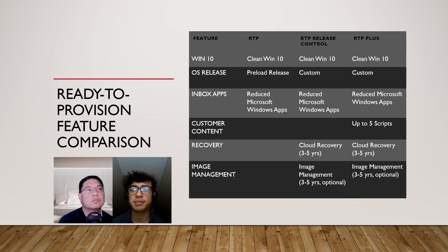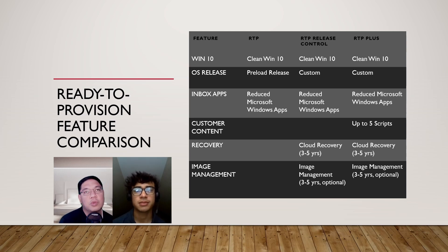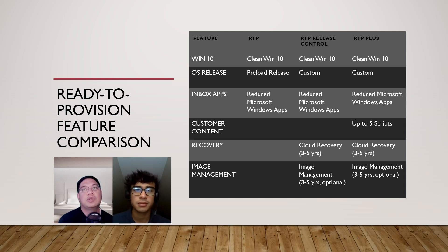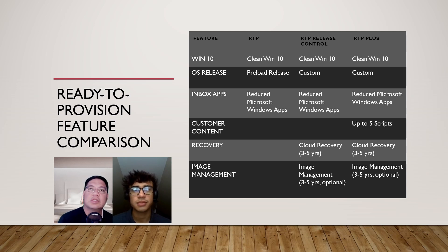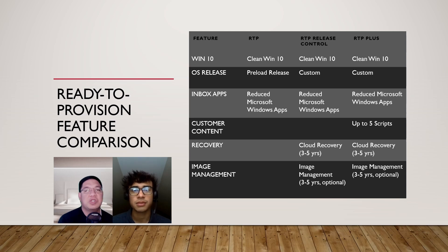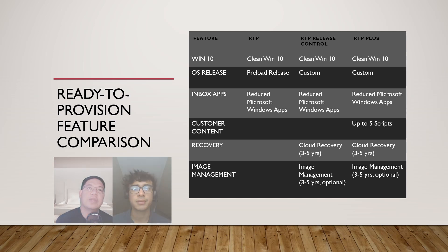So why would someone choose RTP Plus? With RTP Plus, the difference is it's the same as Release Control where you can choose the version of Windows, but it also has five slots so you have the opportunity to add other things. Most customers that use this are in manufacturing — companies that still have an on-prem instance and may have custom software. To save time, that custom software can be loaded in the factory, and then all the regular software can come down from the cloud as needed.